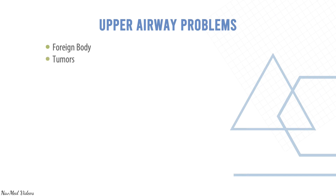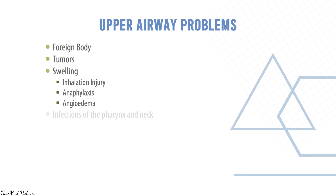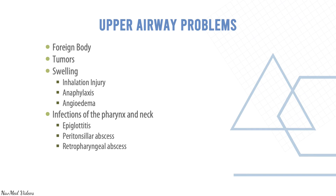Upper airway problems include foreign body, tumors, swelling, inhalational injury, anaphylaxis, angioedema, and infections of the pharynx and neck — such as epiglottitis, peritonsillar abscess, retropharyngeal abscess, and deep space neck infection.